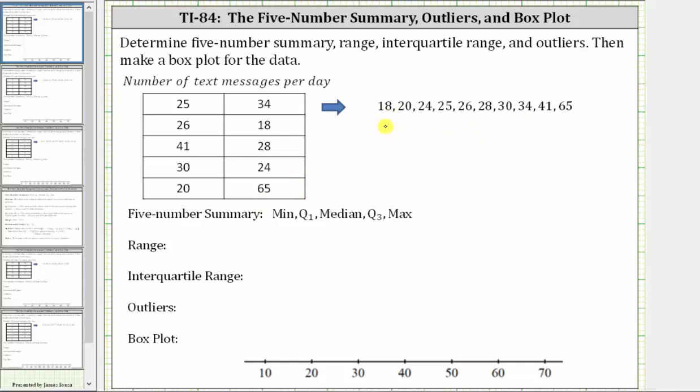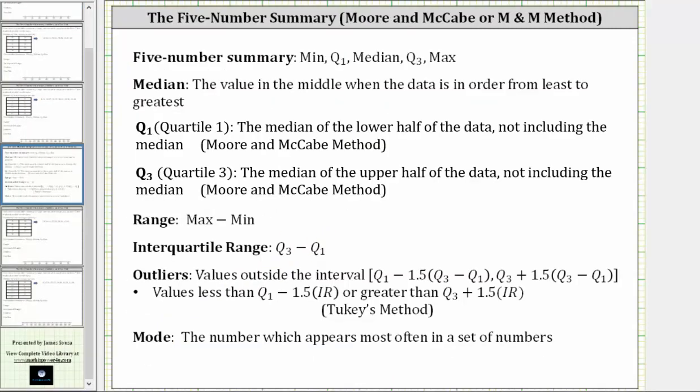For the next step, let's talk about the methods the TI-84 uses to determine quartile one, quartile three, and the outliers because there are different methods for determining these values. To find quartile one and quartile three, the calculator uses the Moore and McCabe method where quartile one is the median of the lower half of the data, not including the median, and quartile three is the median of the upper half of the data, again, not including the median.